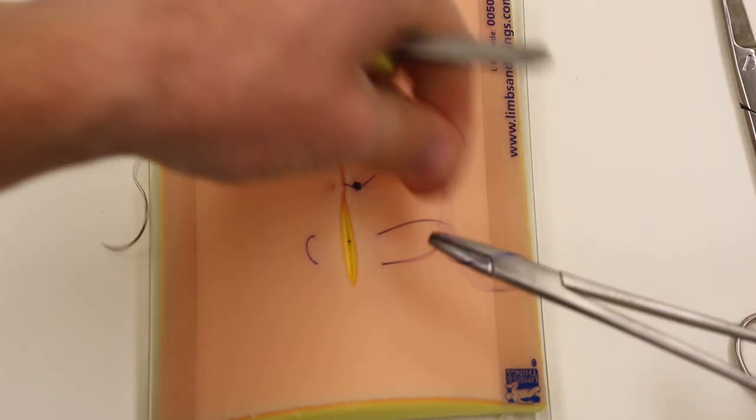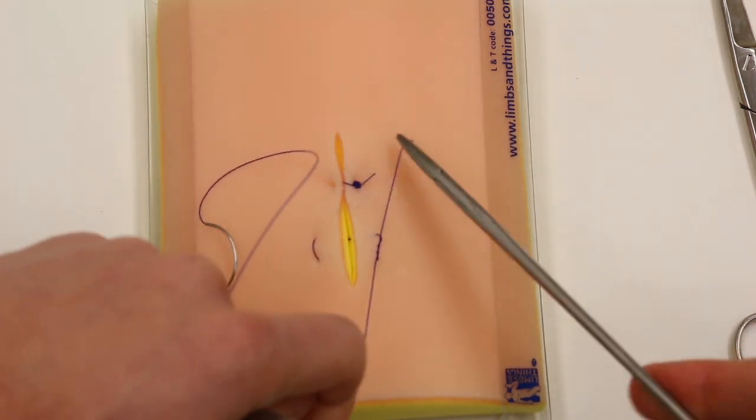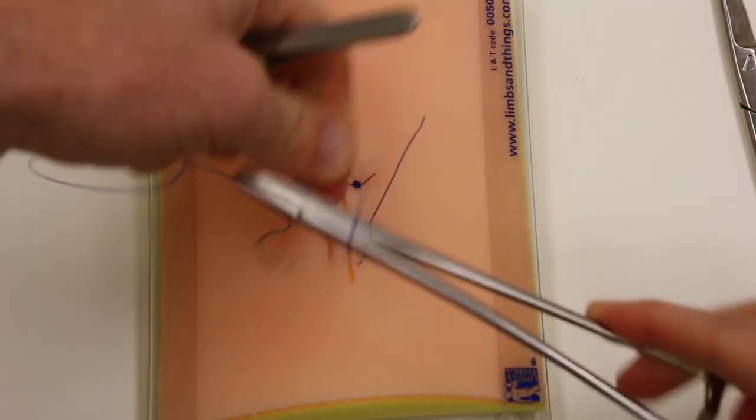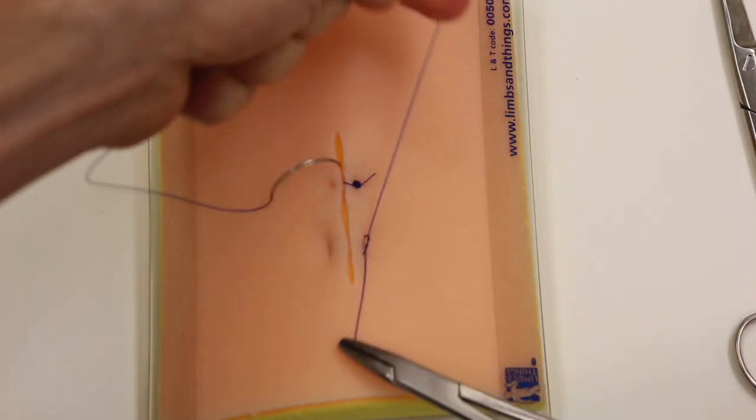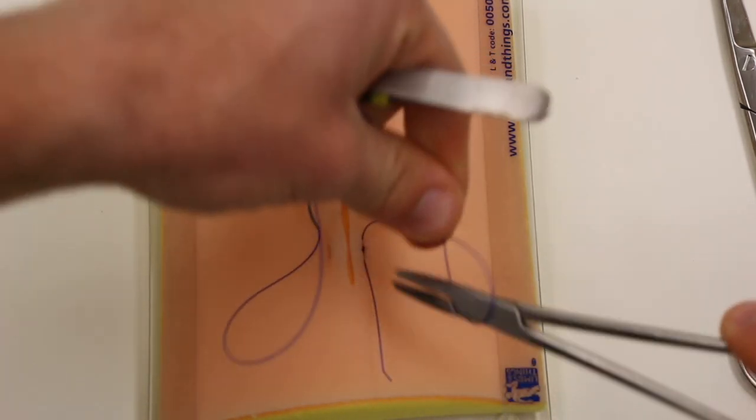Pulling taut. And then since we're using the same suture, you also want six knots.